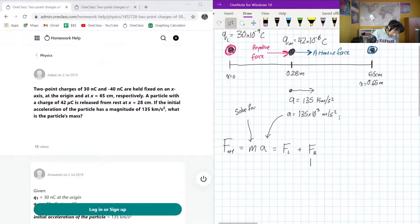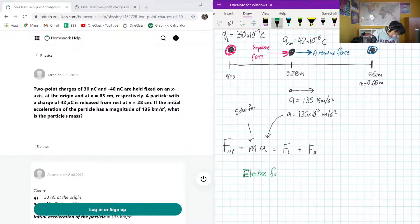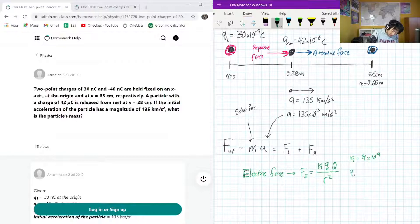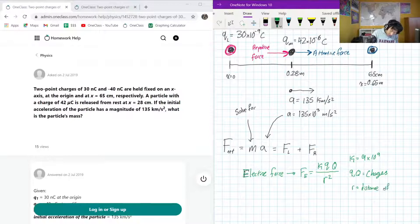Okay, so we know that the electric force equation is KQQ over R squared. K is 9 times 10 to the 9. Q and Q are charges. And R is distance of separation. Okay, so this equation is what we're going to use for both of the FL and the FR.